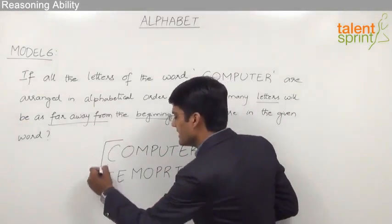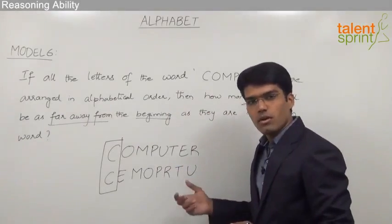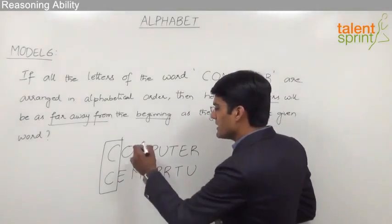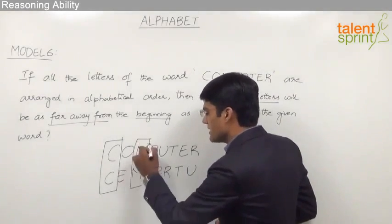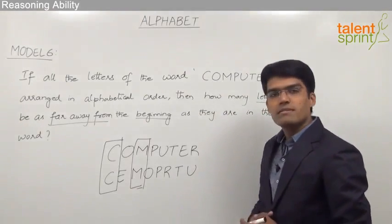So if you see here, the letter C is in the same position in the original word as well as the word which is obtained after the arrangement. Similarly, the other letter which is in the same position is the letter M, and then there is no other letter which comes in the same position.